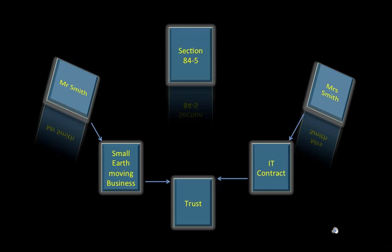Section 84 subsection 5 of the PSI rule states that the taxpayer's ordinary income or statutory income, or the ordinary income or statutory income of any other entity, is your personal services income if the income is mainly a reward for your personal efforts or skills, or would mainly be such a reward if it was your income. In other words, Mrs. Smith's income is still PSI. Billing through the trust does not change this fact, as Mrs. Smith does not derive income in her own name but through the family trust.